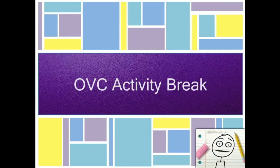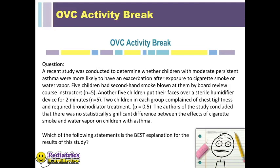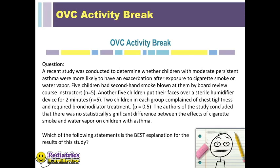Here's a practice question similar to something you might see on the boards. A recent study was conducted to determine whether children with moderate persistent asthma were more likely to have an exacerbation after exposure to cigarette smoke or water vapor. Five children had secondhand smoke blown at them (N=5). Another five children put their faces over a sterile humidifier device for two minutes (N=5). Two children in each group complained of chest tightness and required bronchodilator treatment, p-value = 0.5. The authors concluded there was no statistically significant difference between the effects of cigarette smoke and water vapor on children with asthma. Which statement best explains the results?